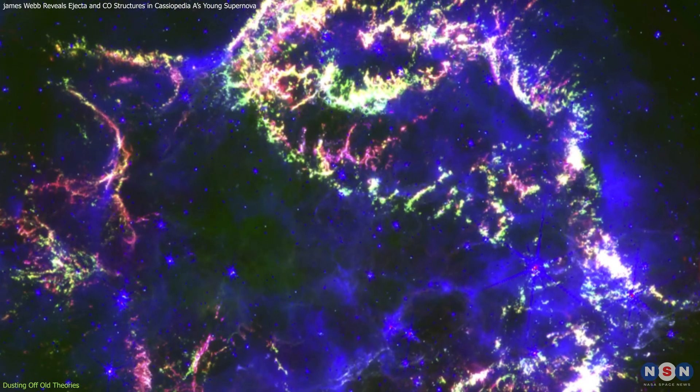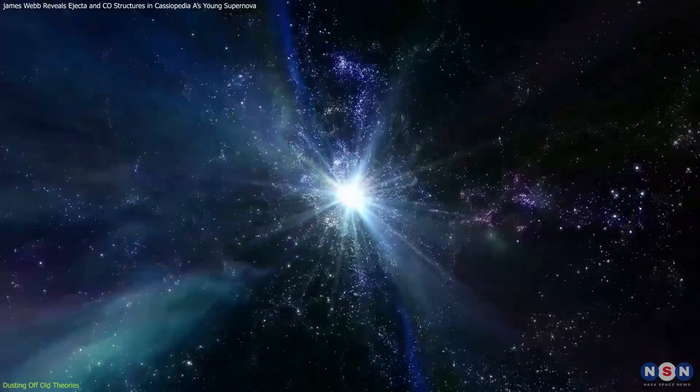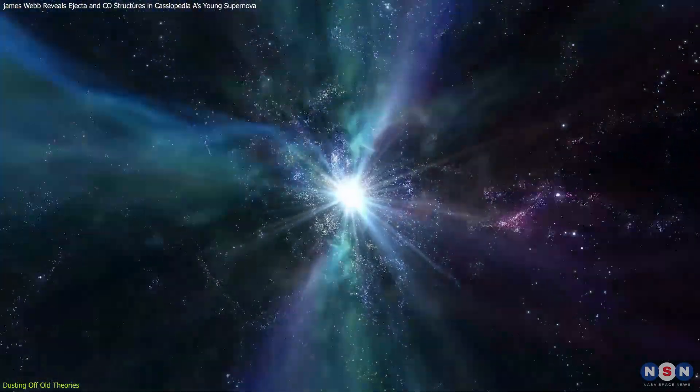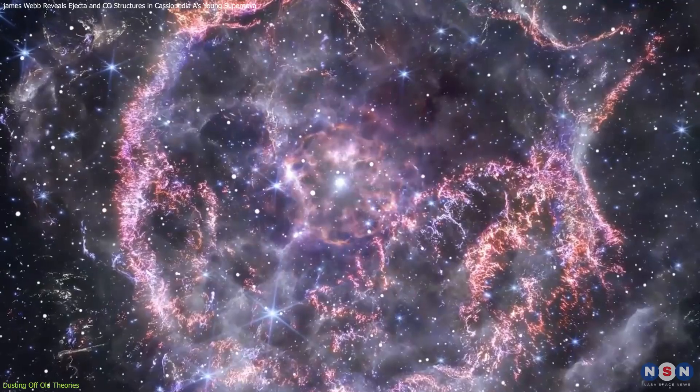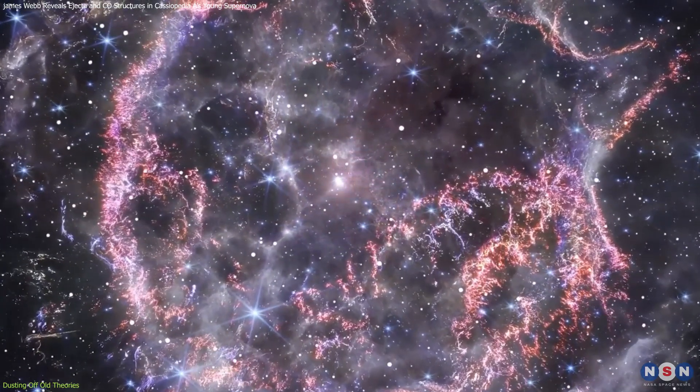However, the observations of Cassiopeia A indicate that supernova remnants can rapidly generate significant amounts of dust, suggesting an alternative pathway for dust production that is both faster and occurs on a larger scale.